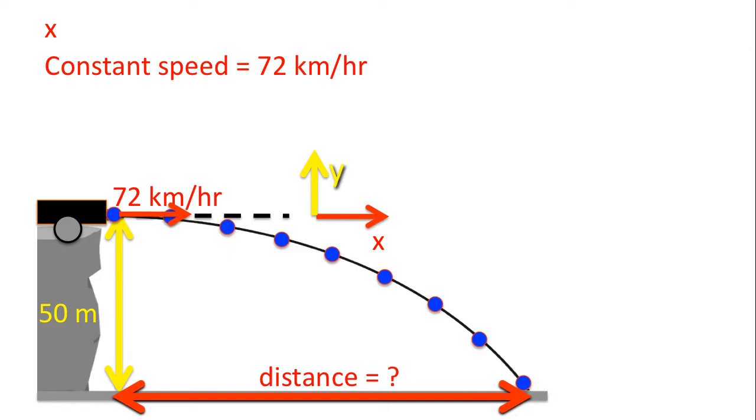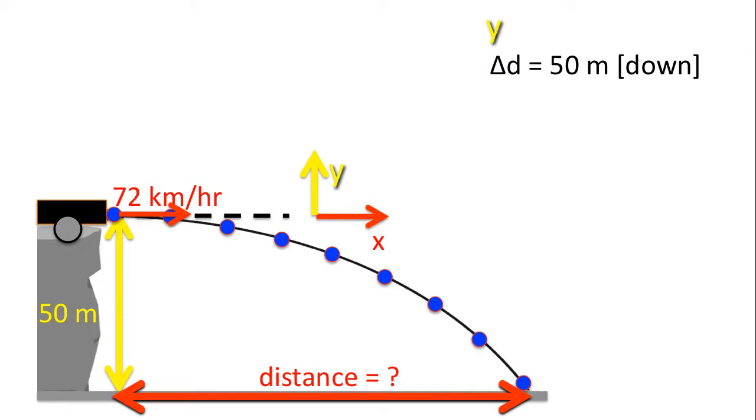Now for the X direction, we know the speed is constant, 72 kilometers an hour. In meters per second, that's 20 meters per second. We divide by 3.6. Because the velocity in the X direction does not change, we could use this formula: speed equals distance over time. Substituting, we know that our speed is 20 meters per second. But the problem is, we don't know the distance, and we don't know the time. So often in projectile motion questions, we need to use both directions to solve a problem.